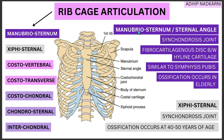Let's start with the manubriosternal joint, also known as the sternal angle. The manubrium, the sternal body, and the xiphoid process are the three parts of the sternum. The place where the manubrium and sternal body join is the manubriosternal joint, and where the sternal body and xiphoid process meet is the xiphisternal joint.